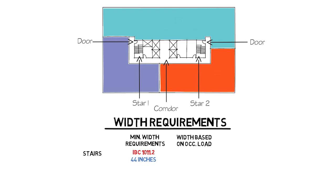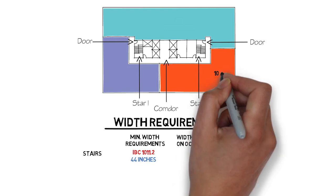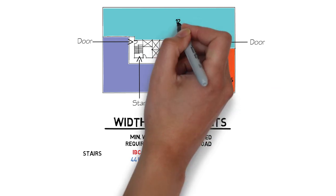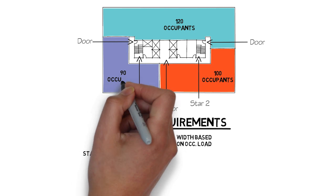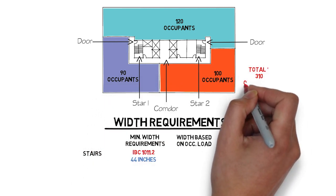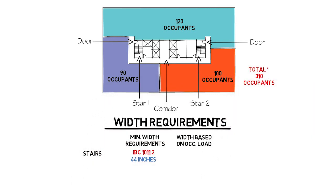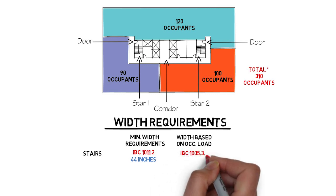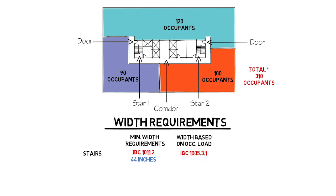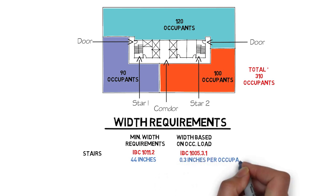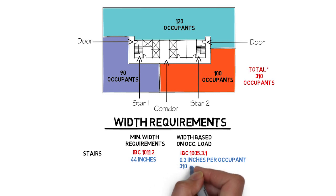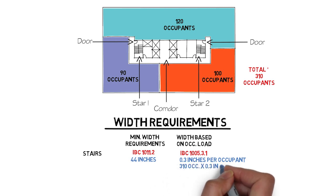For the sake of this example, let's assume that you have three suites on this floor with the following occupant loads: one suite has 100 occupants, another has 120 occupants, and the other has 90 occupants, for a total of 310 occupants on the floor. Per IBC section 1005.3.1, you must provide 0.3 inches of width per occupant. This means that you need a total of 310 occupants times 0.3 inches, which equals a total of 93 inches.